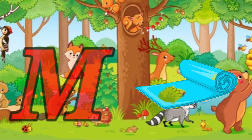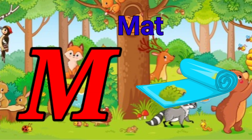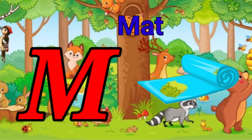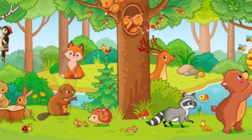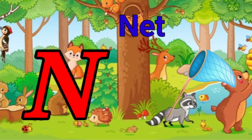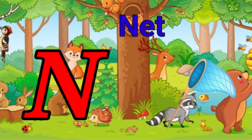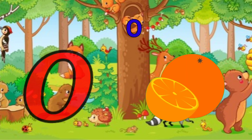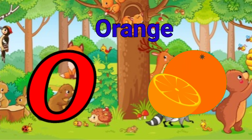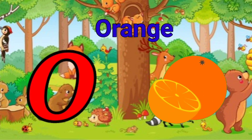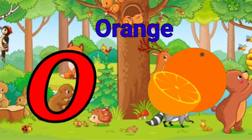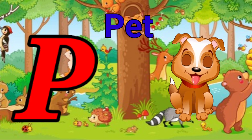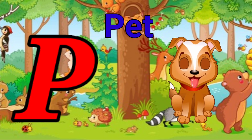M is for mat, m-m-mat. N is for net, n-n-net. O is for orange, o-o-orange. P is for pet, p-p-pet.